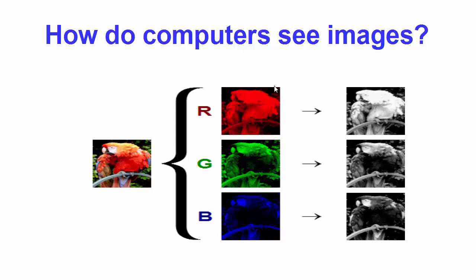In colored images, we have three channels — that is RGB, which stands for Red, Green, Blue. Grayscale images have one channel and colored images have three channels. Your standard digital camera has three channels: red, green, and blue. We will learn more about images and how we can process them using OpenCV in later videos.